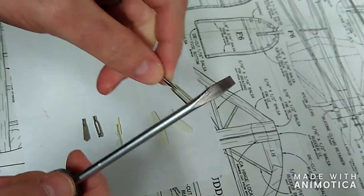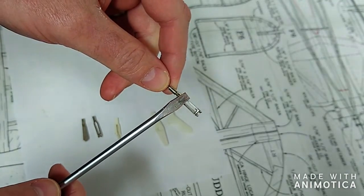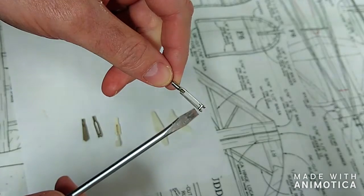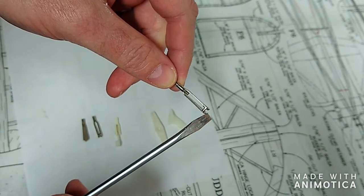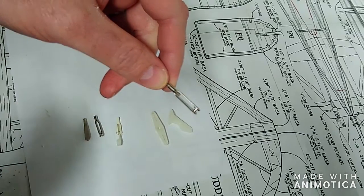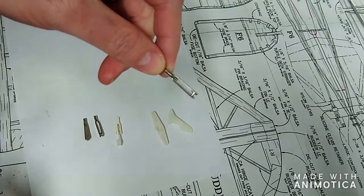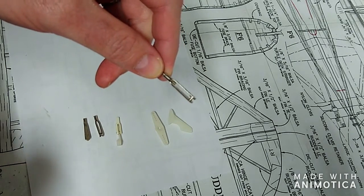The clevis itself has got two arms, one there and one there, and a pin. And it's this pin that essentially acts as a pivot for the control horn or the servo arm.